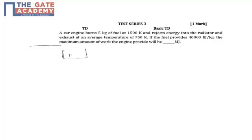So at 1500K you have some energy that is coming from 5kg of fuel and it is rejected by means to the radiator as well as to the exhaust, as well as some amount is converted into work. I am just considering a very simple case.